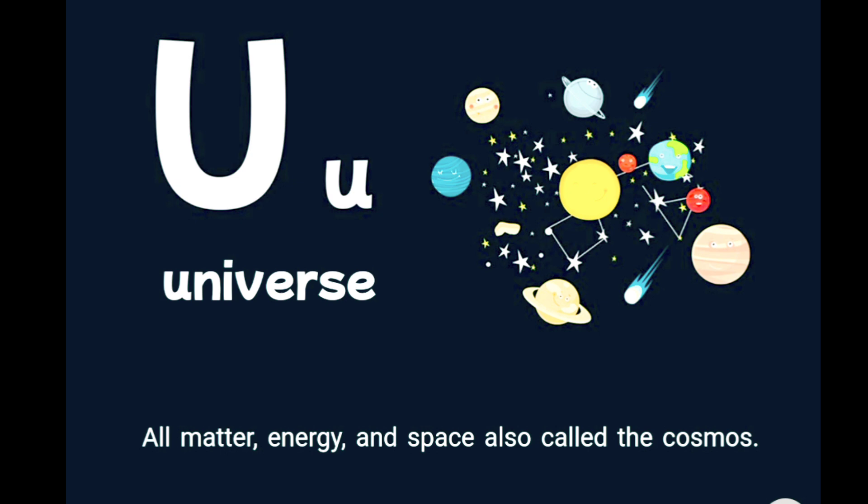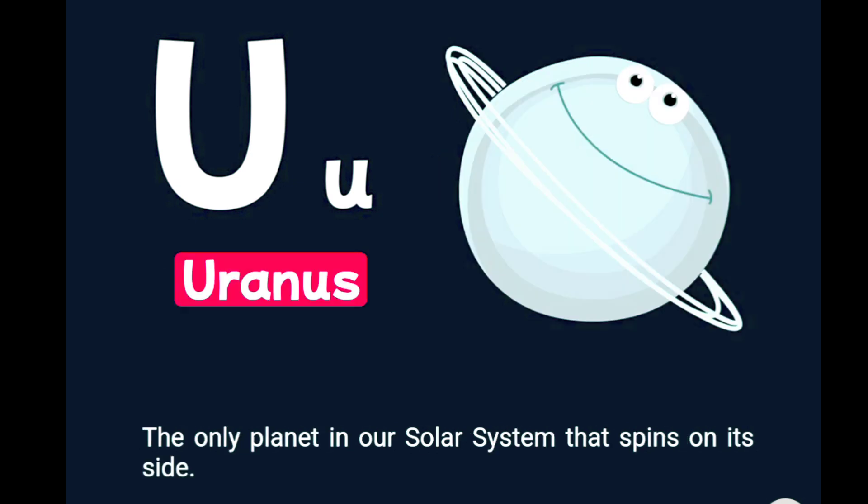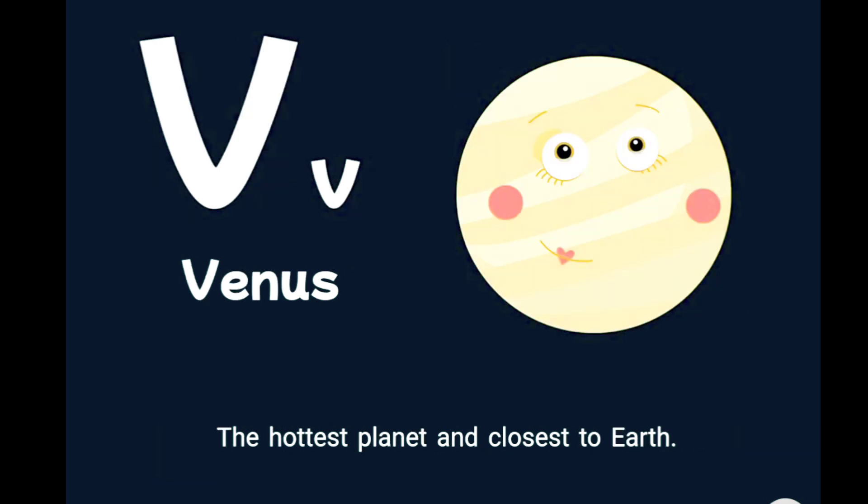U is for Uranus, the only planet in our solar system that spins on its side. V is for Venus, the hottest planet and closest to Earth.